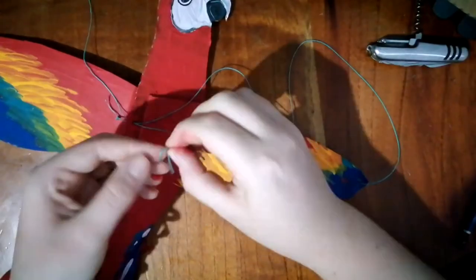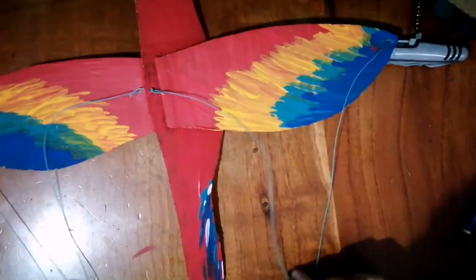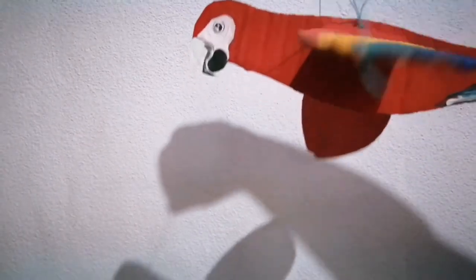You could make that easier by just poking two holes into the macaw's body to hold those wings up. So there you go, and now it's ready to fly.